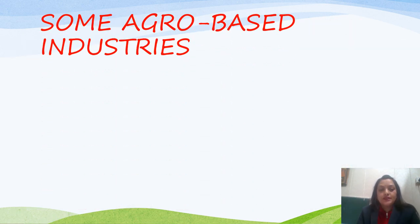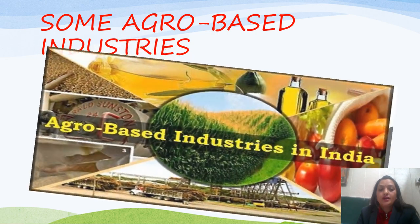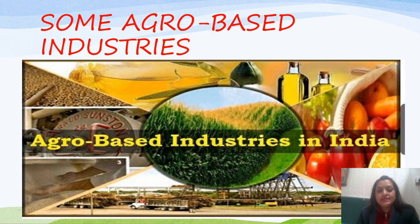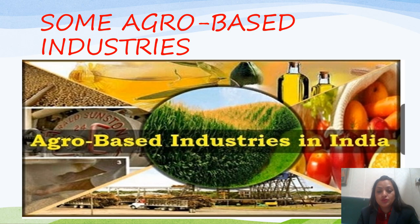Let's study about agro-based industries. The agro-based industries are the industries which use agriculture products as the raw materials. For example, sugar cane is used to make sugar, and cotton clothes are made from cotton. All the industries which use agriculture products as the raw material are known as agro-based industries.